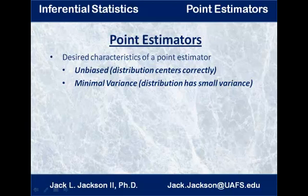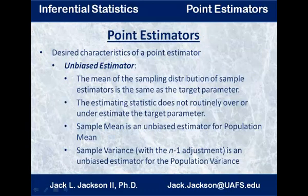There are two basic characteristics that we would like for a point estimator: we want it to be unbiased and to have minimal variance. Unbiased means that the distribution centers up correctly. For an unbiased estimator, the mean of the sampling distribution of sample estimators is the same as the target parameter.